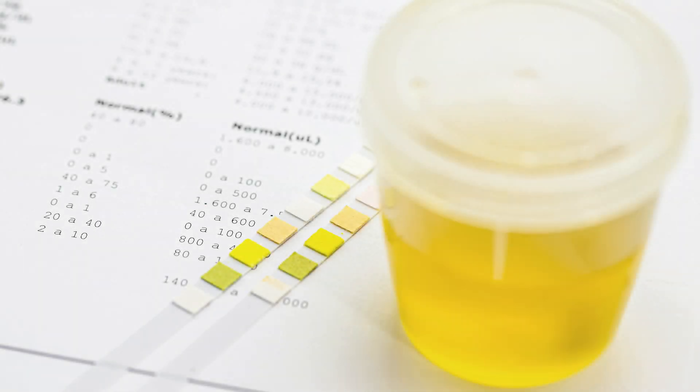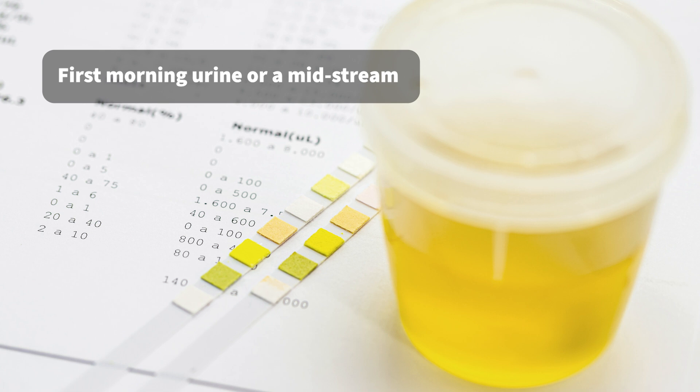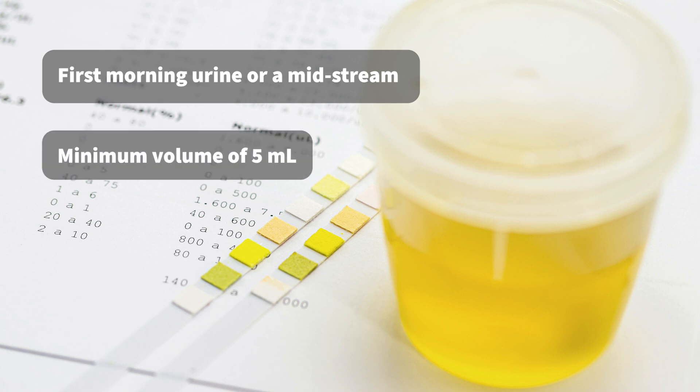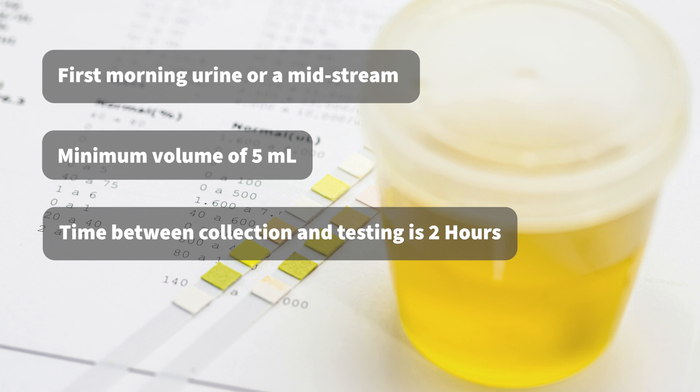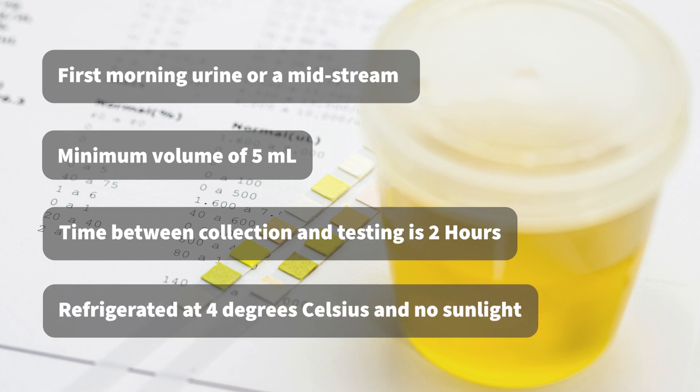Let's consider some key tips before starting the procedure. Urine samples should be the first morning urine or a midstream catch. Urine samples must be a minimum volume of five milliliters. The optimum time between collecting and testing the urine is two hours. If it has been or will be longer, then the sample should be refrigerated at four degrees Celsius and should not be exposed to direct sunlight. The sample must be back at room temperature before testing.